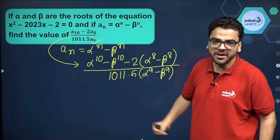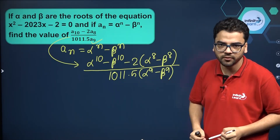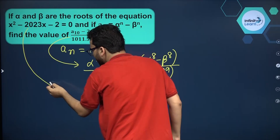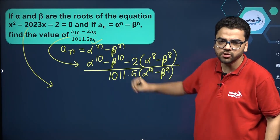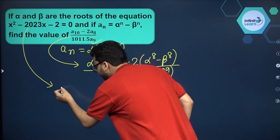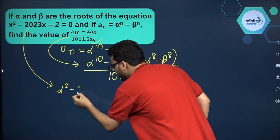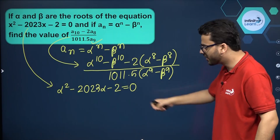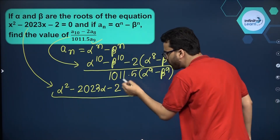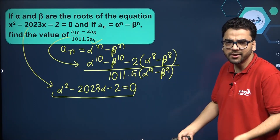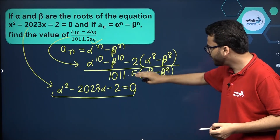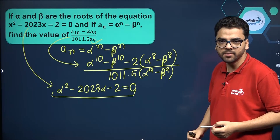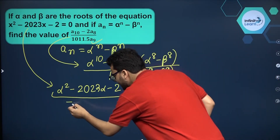We cannot find alpha and beta separately, and simplifying directly will take too much time — but we can use the actual equation itself. Since alpha and beta are roots of the quadratic equation, we can substitute alpha for x: alpha squared minus 2023 alpha minus 2 equals 0. Now, can we multiply both sides of this equation by alpha raised to the power 8? We want a relation between alpha to the power 10, alpha to the power 9, and alpha to the power 8.